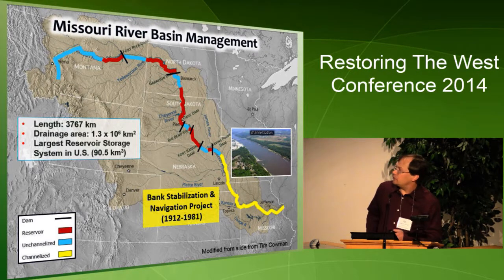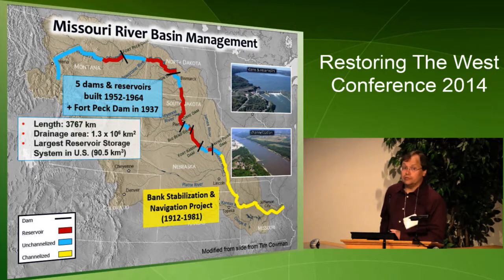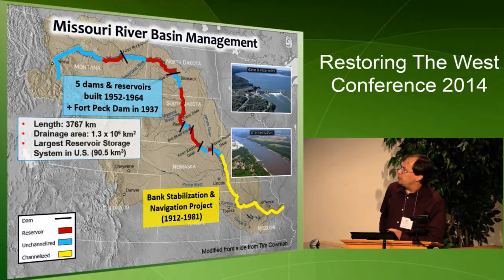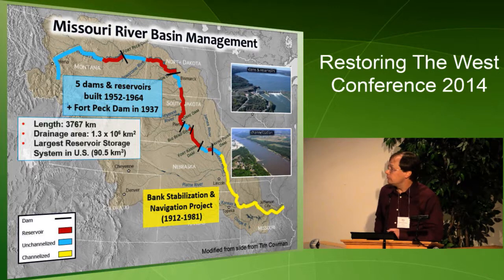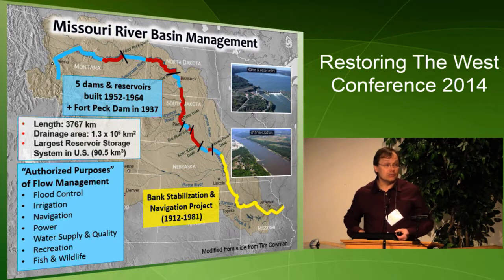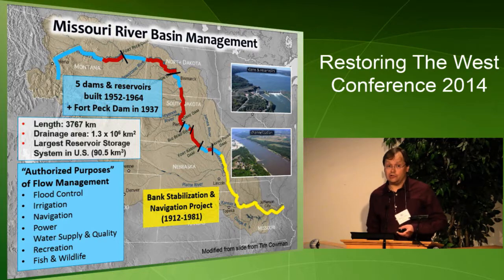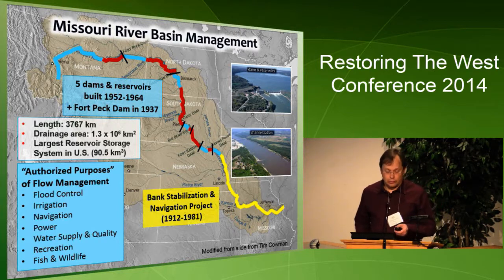The upper two-thirds is split. This upper portion is in part the servant of the lower third in terms of managing flows, with a series of six large dams and reservoirs built in the 20th century — especially five built between the 1950s and early 1960s in the Dakotas. About half of the upper area consists of more remnant riverine stretches, though influenced by upstream dams. This dam and reservoir system is managed by the U.S. Army Corps of Engineers for multiple authorized purposes including flood control, navigation, hydropower, and increasingly, recreation and fish and wildlife.